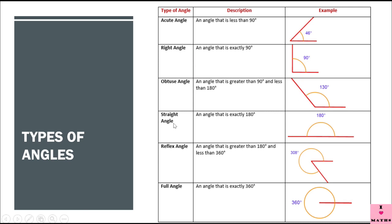Now straight angle — as the name suggests, the straight angle looks like a straight line. It is exactly 180 degrees. For example, this angle is 180 degrees. Now reflex angle, which I have mentioned in my earlier videos, is more than 180 degrees and less than 360 degrees.